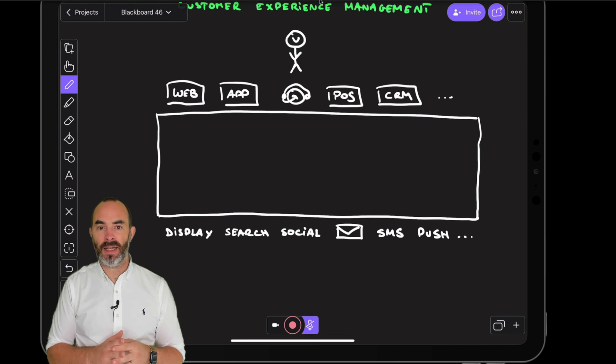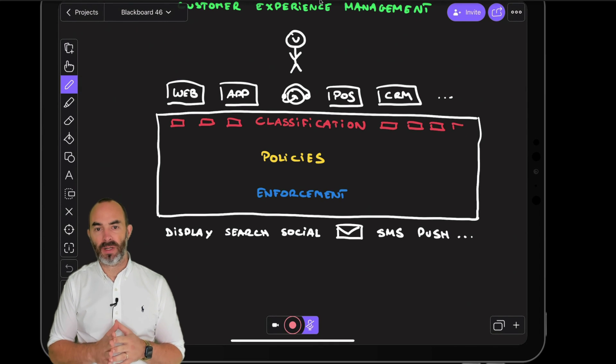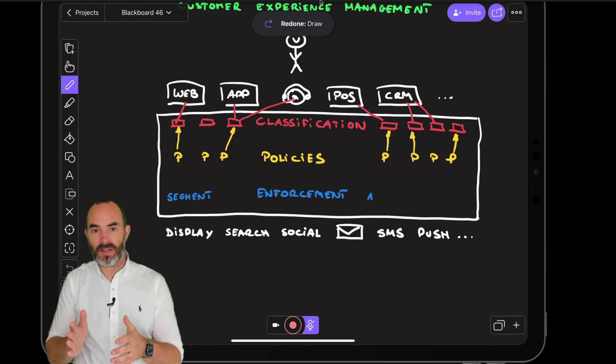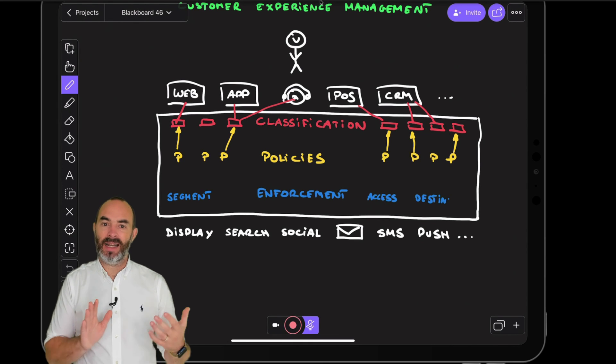Every single communication has to be aligned, orchestrated and coordinated in real time. All data that is collected needs to be labeled and classified in real time and the policies that were defined need to be activated in real time and those policies need to be applied in segmentation, data access and destination forwarding all in real time.